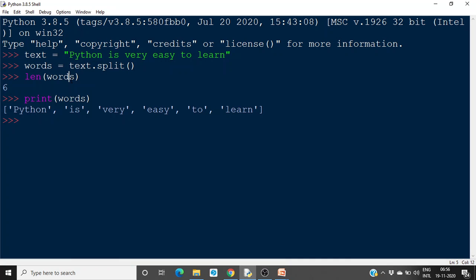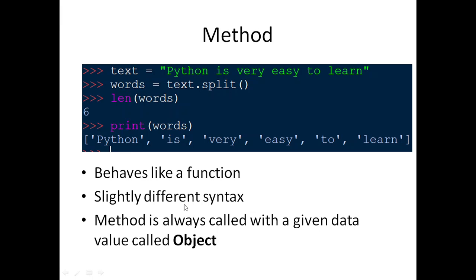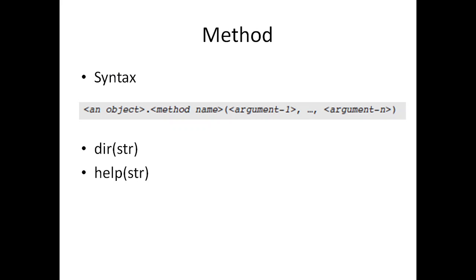The thing that is to be noted is: it's similar to a function, but we should have a data object. The text is a data object. Using this dot operator — data object dot this operator — then we call this method and we will get the result. So this will be split into different words. It's similar to a function, but the only thing is we have to use a data object to call it. Method is always called with a given data value, called an object. So the syntax is: object dot method name, and any arguments, like in functions.